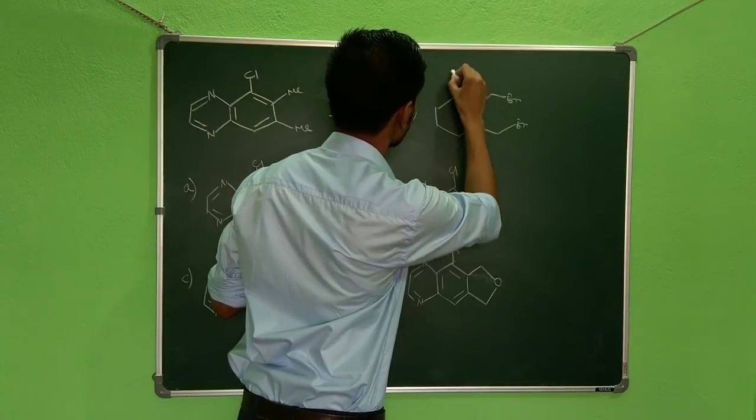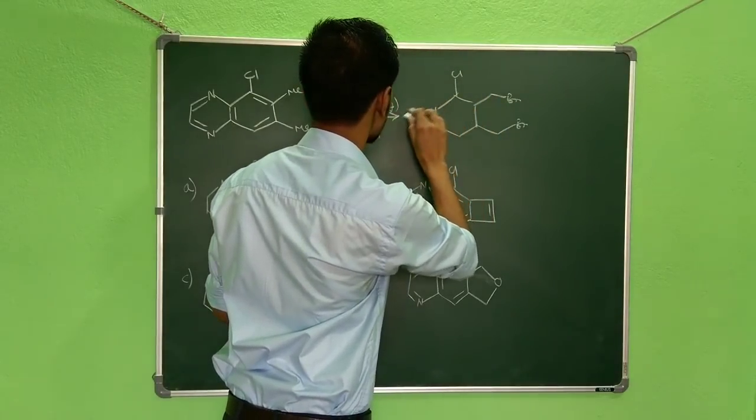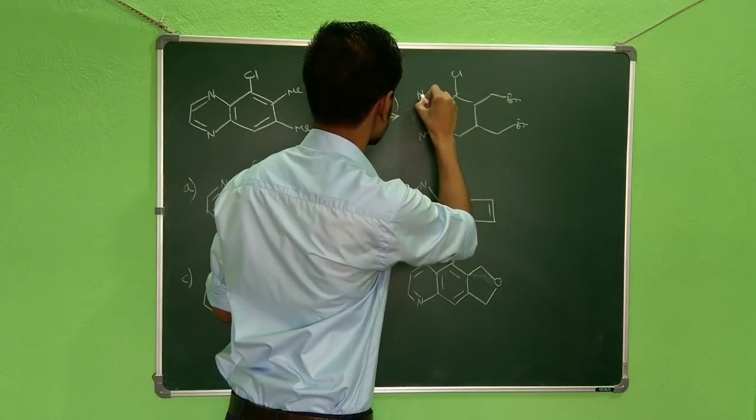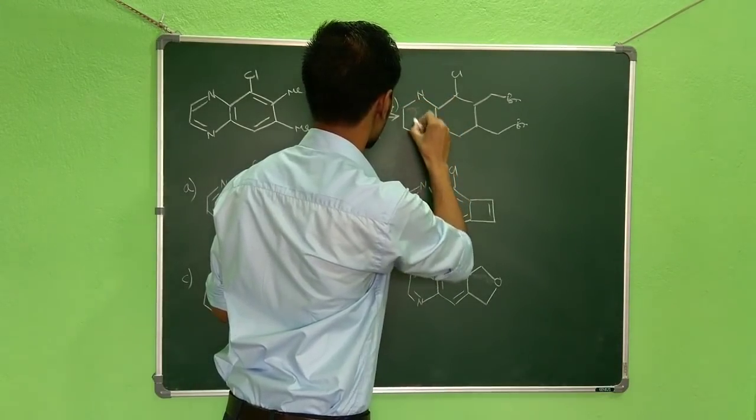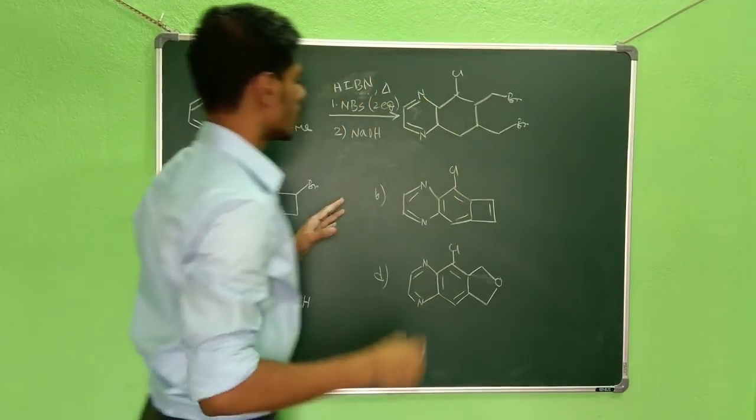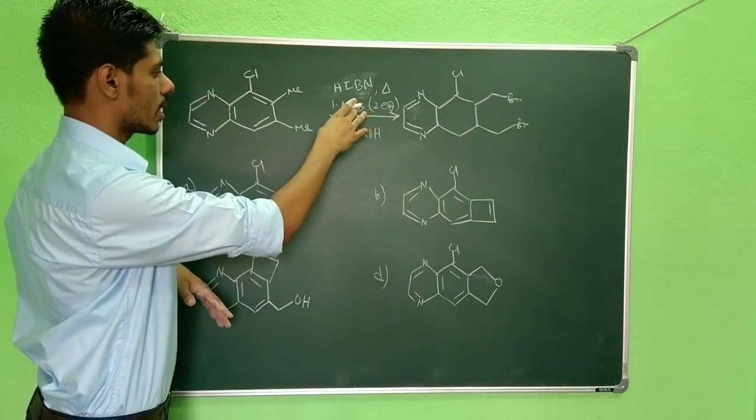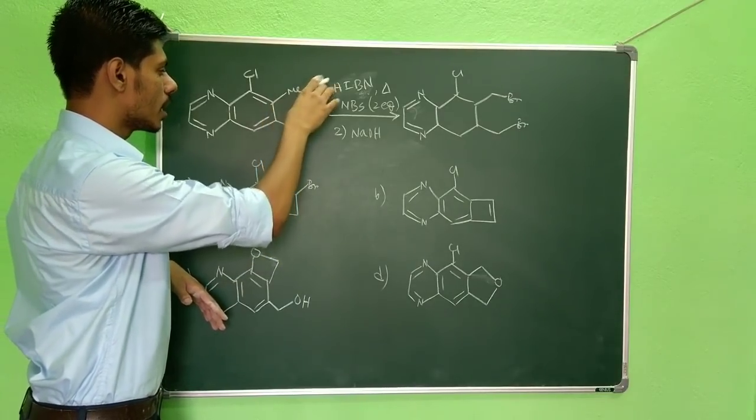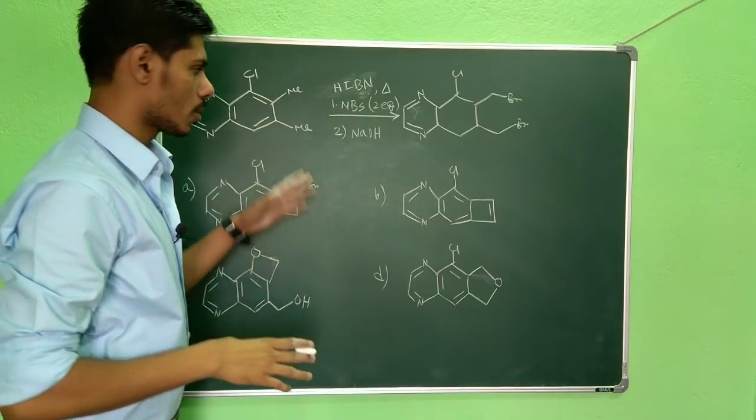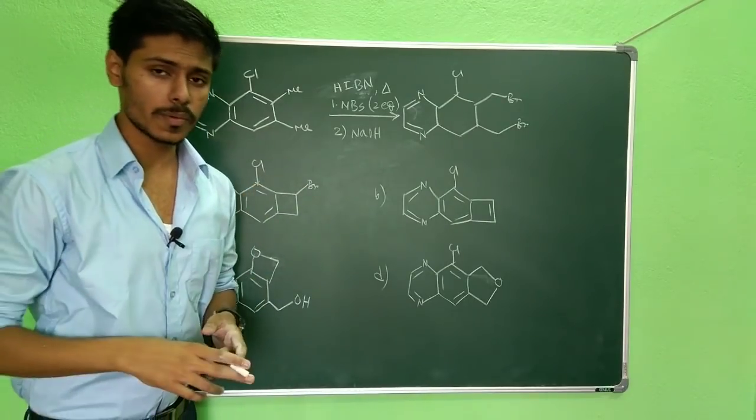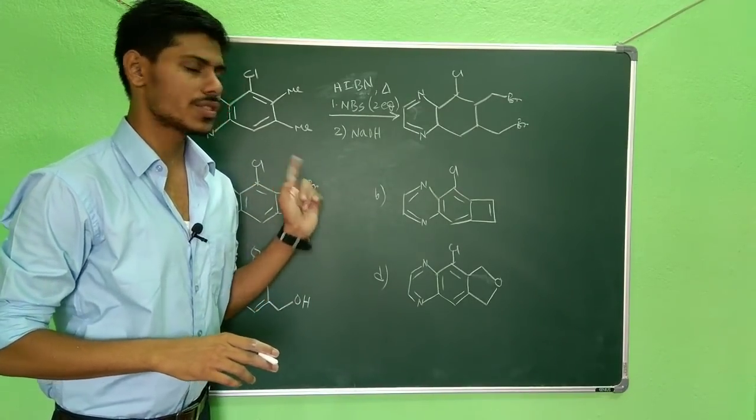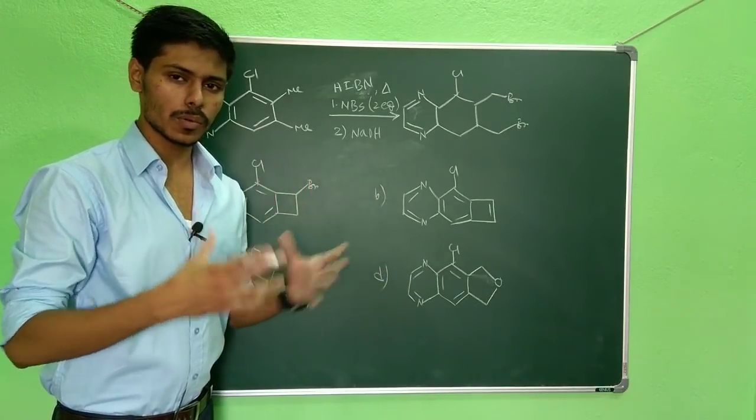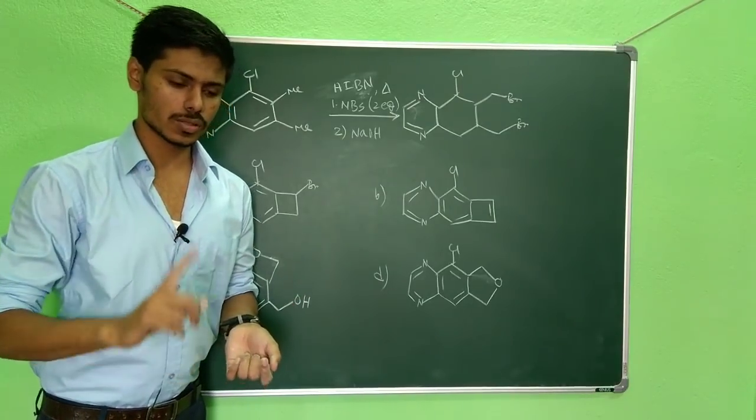Now, you shouldn't have any confusion whether the allylic bromination will take place on the same carbon atom or on different carbons. You may think that when this allylic bromination may take place on the same carbon to give CBr2, but this is not the case. I already discussed in one of my videos that allylic bromination will always take place on two different carbon atoms if two different allylic positions are there.